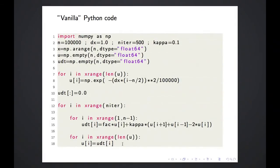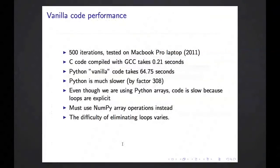So this is the vanilla Python code. And not surprisingly, I'm not encouraging you to use this because this code does quite badly. On my laptop, I did only 500 iterations, and with C code compiled with GCC that took only 0.21 seconds, whereas this Python vanilla code took as long as 64.75 seconds. So it's slower by a factor of 300, which is huge. So we are using NumPy, we are using the efficient arrays, but we are not using them efficiently because we are looping over them explicitly. We must use NumPy operations instead to somehow eliminate the loop.